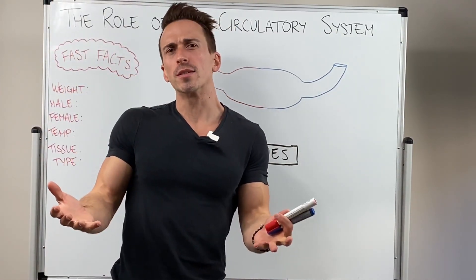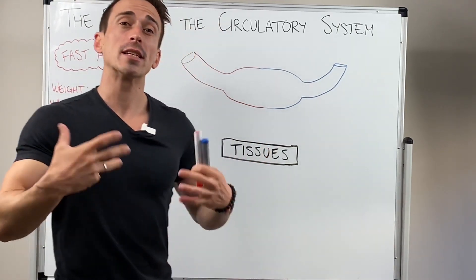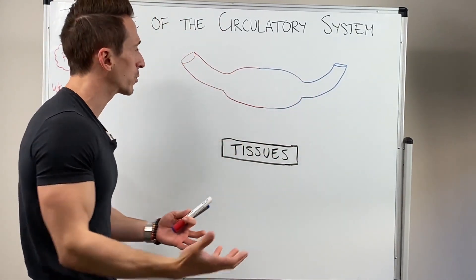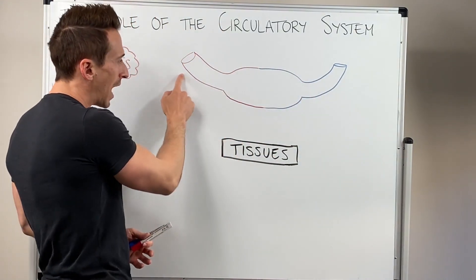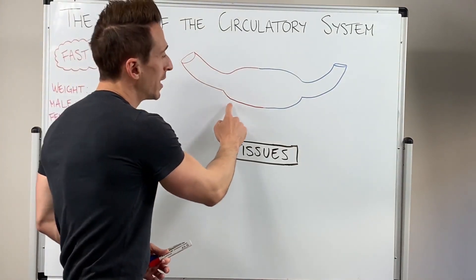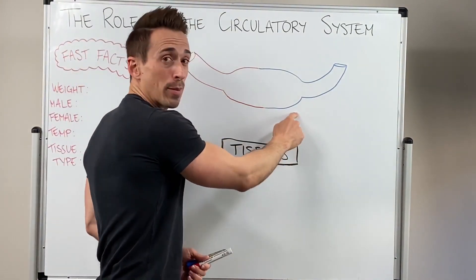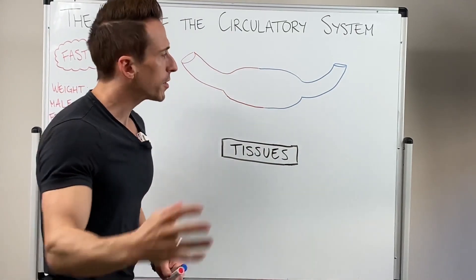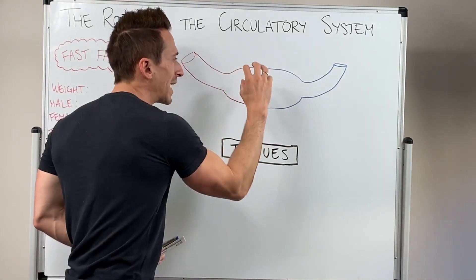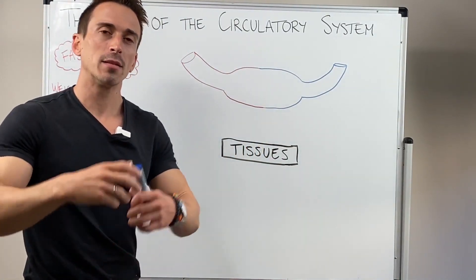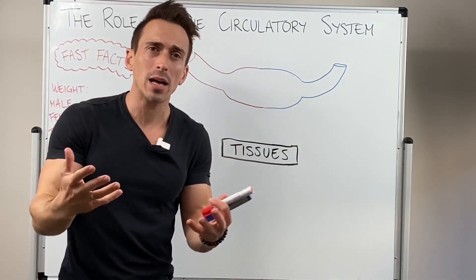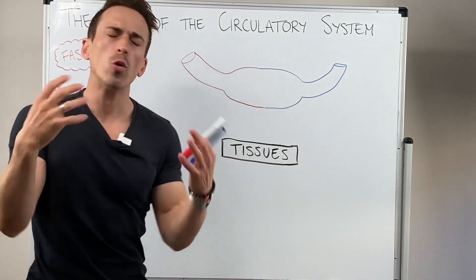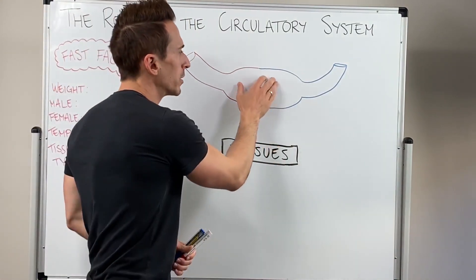So what is the circulatory system? Well firstly it's a collection of blood vessels, and we know that blood vessels comprise of arteries, arterioles, capillary beds, venules and veins. But it's also the components within these blood vessels — so this is blood, this is plasma, these are proteins and all the other components inside.